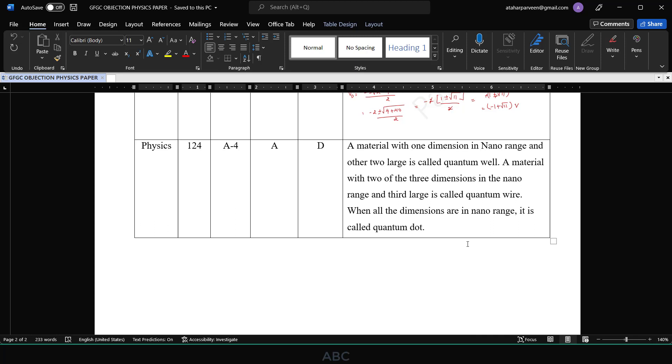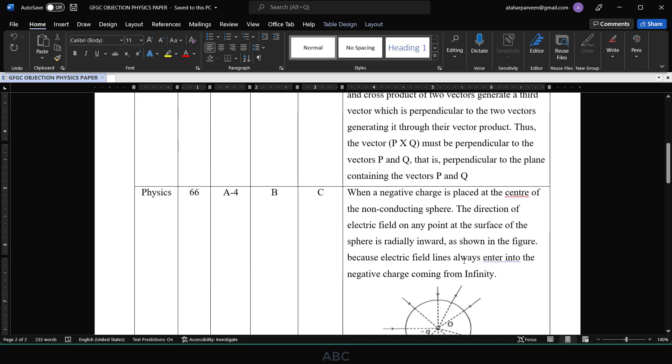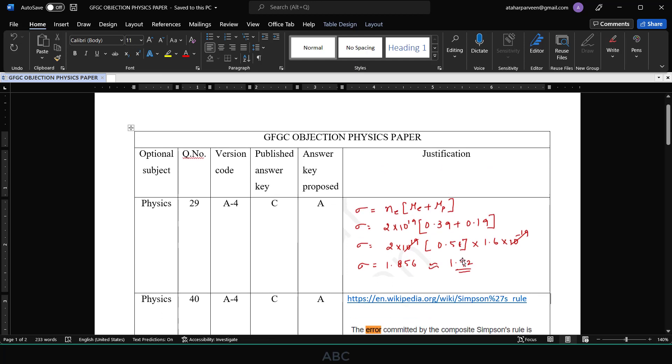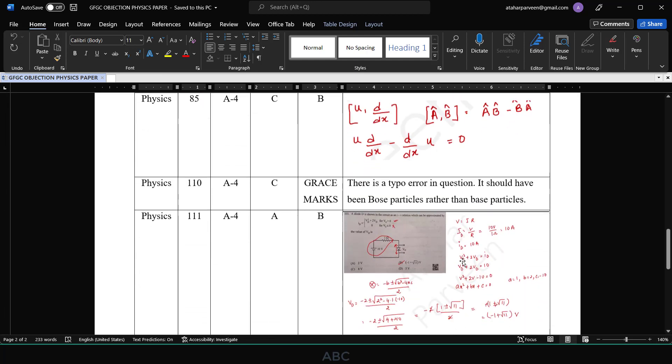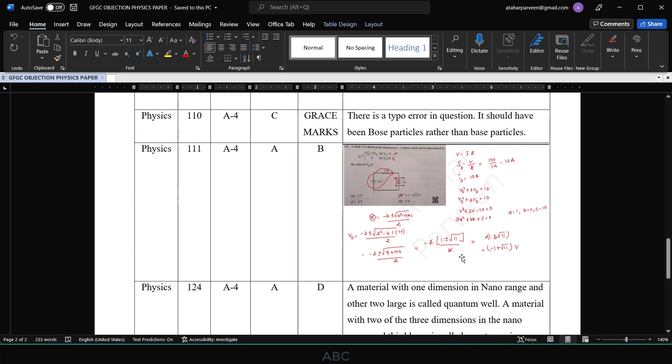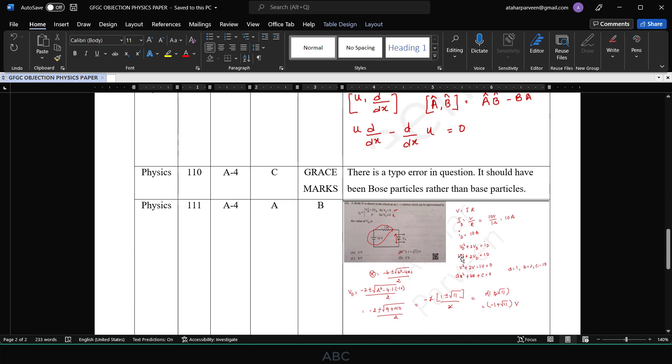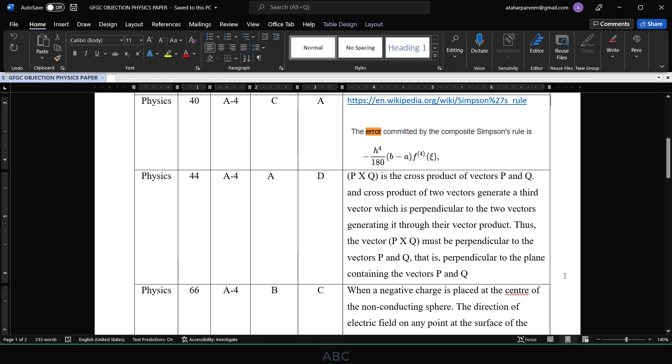Total questions which I have included in the objections are eight questions. In this, two questions are doubtful, question number 85 and 111. Maybe the provisional key is right, but the rest six questions I am sure that they will change the answer key.